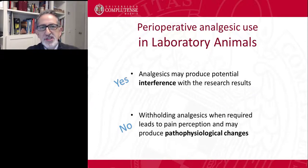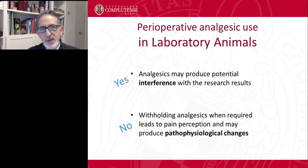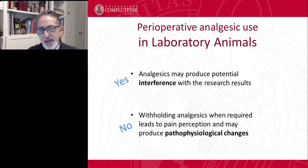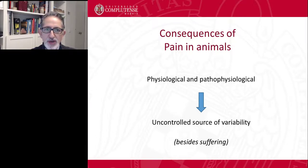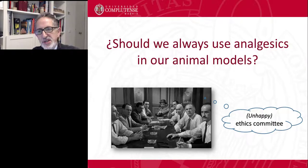We are using analgesics during research with animals, although they may produce some interference with our scientific results. However, we all know that withholding analgesics from an animal that is likely to suffer from pain may also produce negative consequences — some degree of pathophysiological changes that may impair or modify our scientific results, and is a negative consequence for animal well-being. These consequences, besides suffering, involve an uncontrollable source of variability, meaning we may require more animals to get good quality results. So we always use analgesics in our animal models.